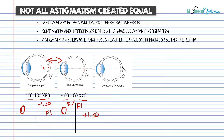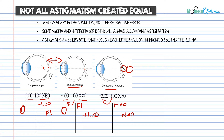Compound hyperopic astigmatism is where both rays end up behind the retina. For example, plus two, minus one: at the 180 meridian we have a plus two correction, and combining gives plus one at 90 degrees. Both focal points converge behind the retina — fully hyperopic. The visual effects of compound hyperopia will be more significant than simple, because in simple hyperopic astigmatism part of the refraction lands on the retina, while in compound both land behind — bad for everything.